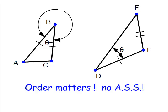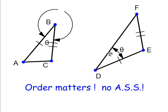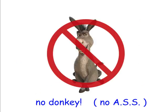We have to be careful because order does matter — side-angle-side means a side, an included angle, and a side. This triangle is not congruent to the one on the right because you have a side, no included angle, and a side — the angle is not included between the one mark and the two marks. So this is side-angle-side, but this is angle-side-side. To help you remember that order matters: no donkey — no angle-side-side.